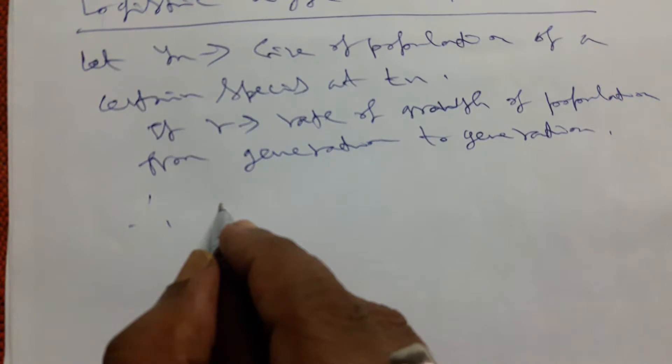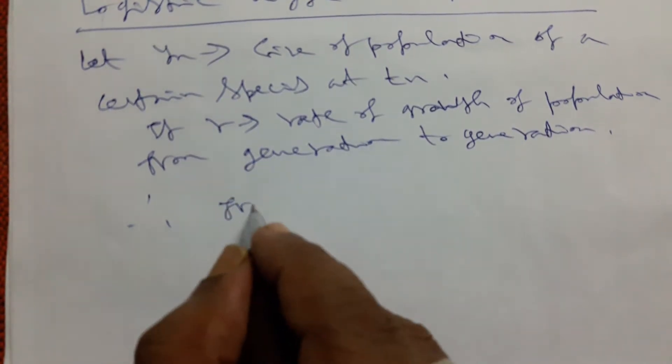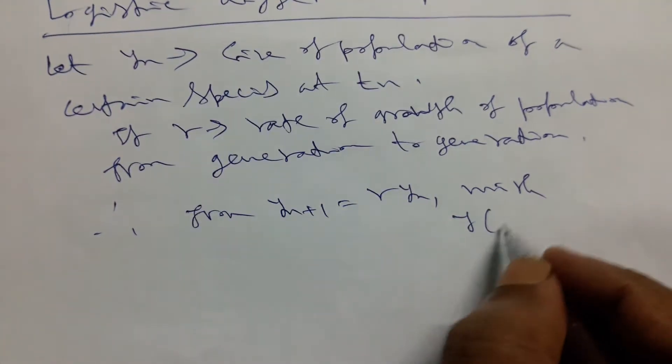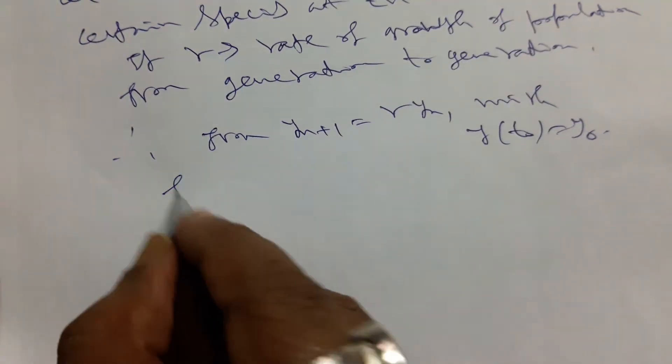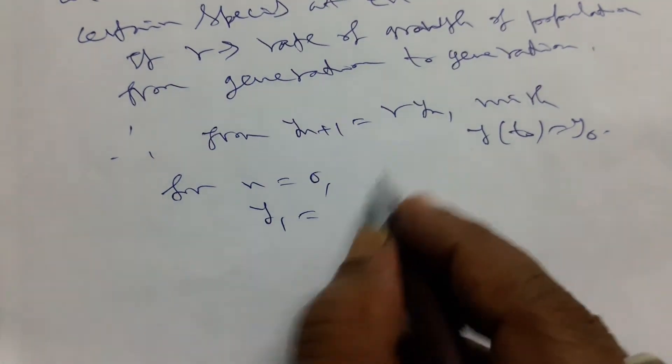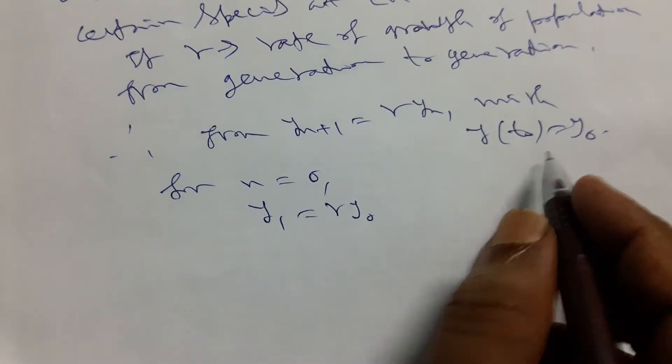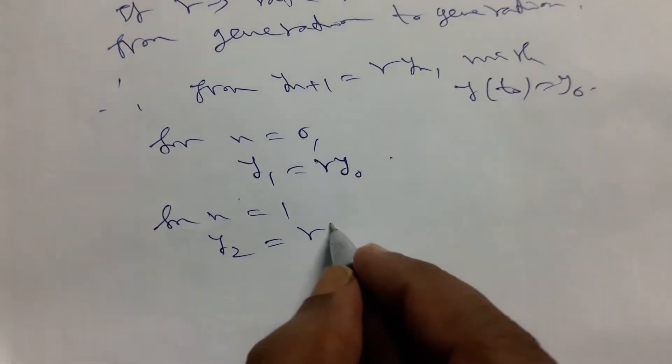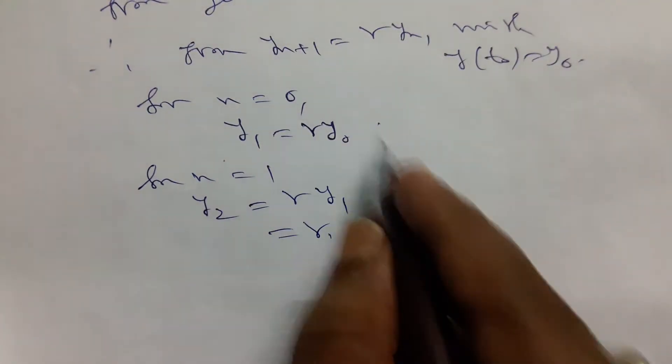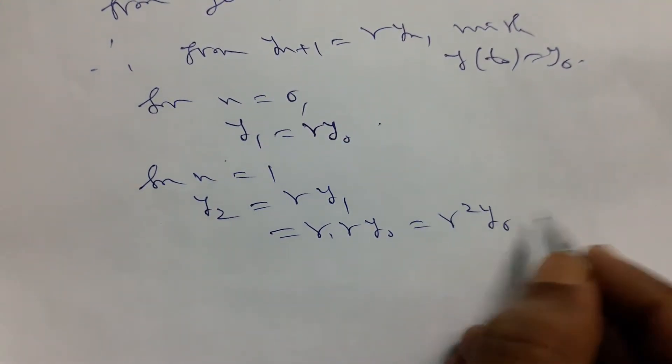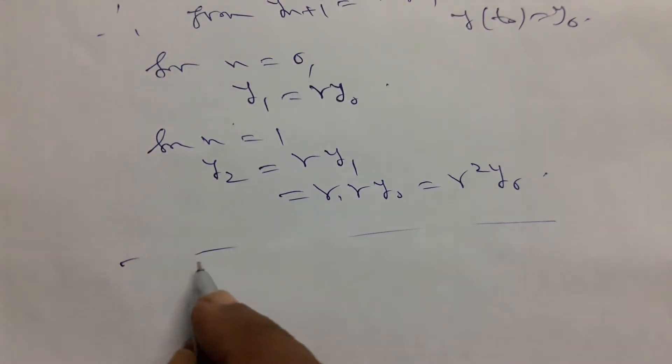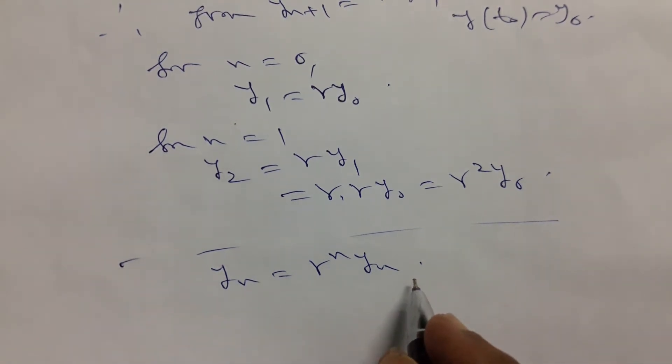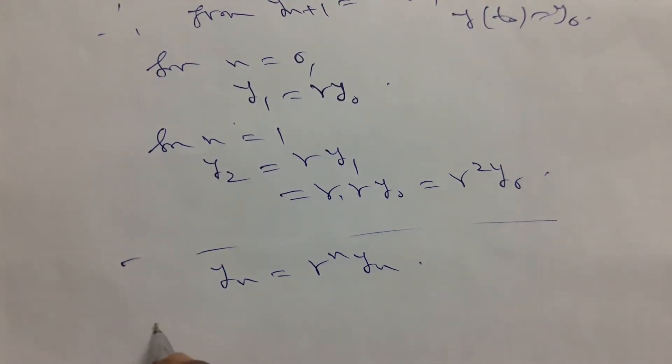Therefore from y_{n+1} equals r*y_n with y(t_0) equals y_0, we find for n equals 0, y_1 equals r*y_0. If we take n equals 1, then y_2 equals r*y_1, and y_1 is r*y_0, so we find that is r²*y_0. So in this way we find finally y_n equals r^n*y_0 for the successive relationship, by the method of iteration.